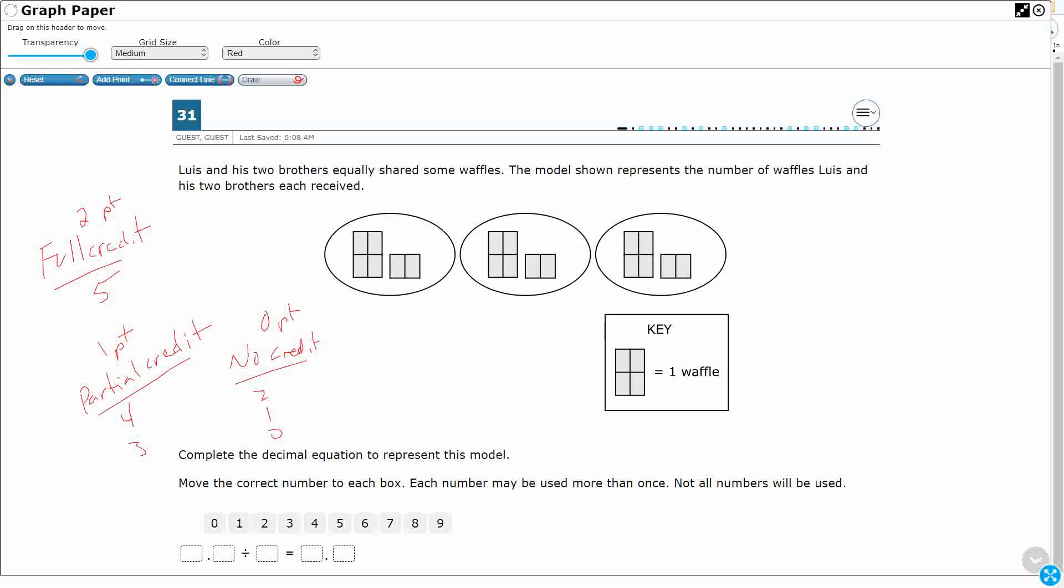So Luis and his brothers, two brothers equally shared some waffles. The model shown represents the number of waffles Luis and his two brothers each received. So this is very important because this is kind of a confusing thing here, okay?